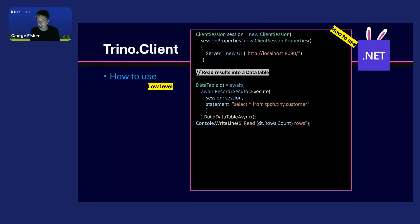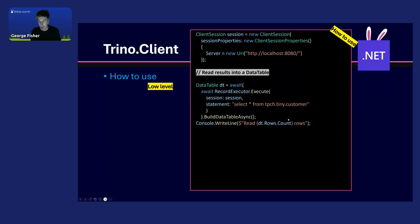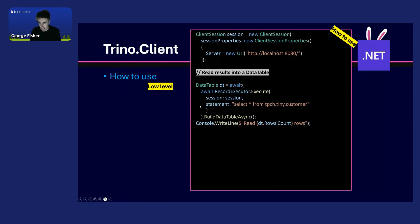Now we talked about the higher level — Trino connection, Trino command approach. There's also a more low-level API: you can create a client session object, provide a bunch of properties, and then use the record executor to execute. Behind the scenes it will do paging. This record executor is just as fast as the pager. The pager is currently not exposed but you could easily expose it — it's not necessary, this is just as fast. And there's a function to build the results right into a .NET DataTable.